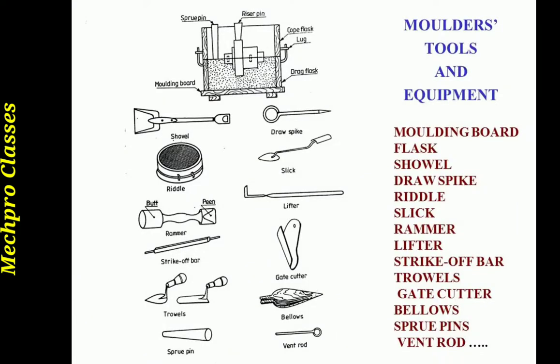Here we will find the different tools and equipments for casting purposes. You can see the shovel for sand mixing and different purposes. You will find the riddle, which is used to separate metal parts, scrap parts, and pebbles from the sand. Then you can find the rammer to ram the sand. Then the strike-off bar to remove excess sand from the cope and drag box. Then you can find the trowel, the draw spike, the slick, and the lifter.